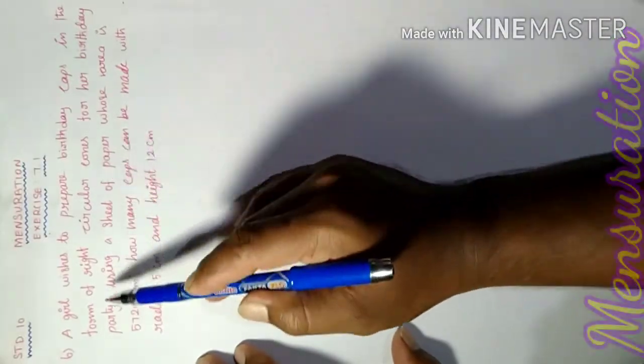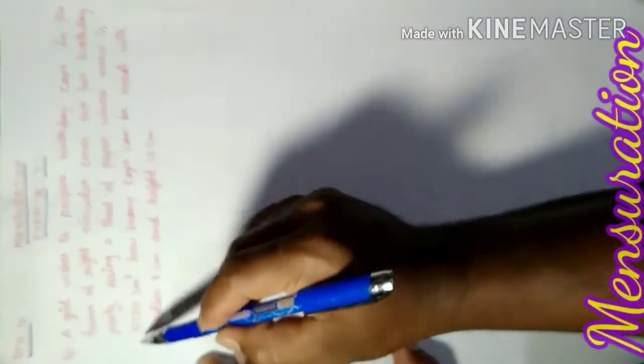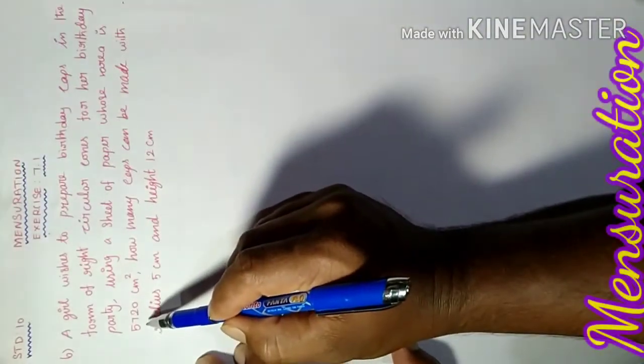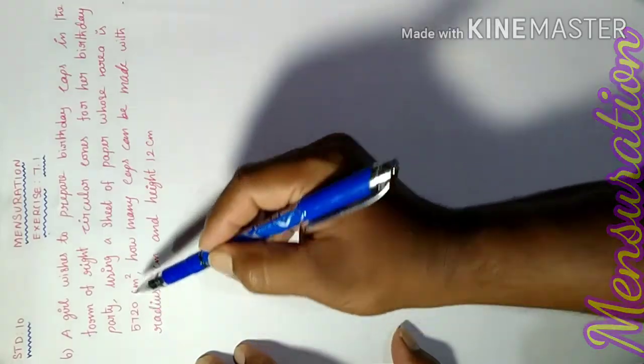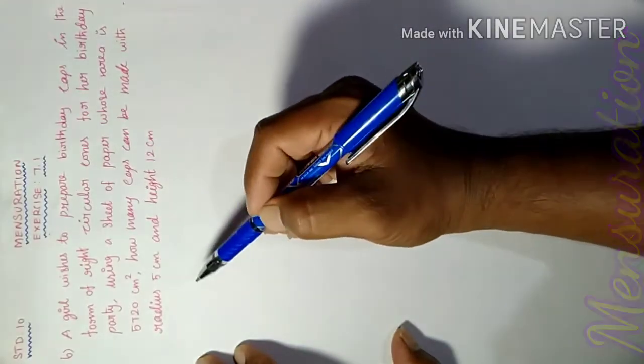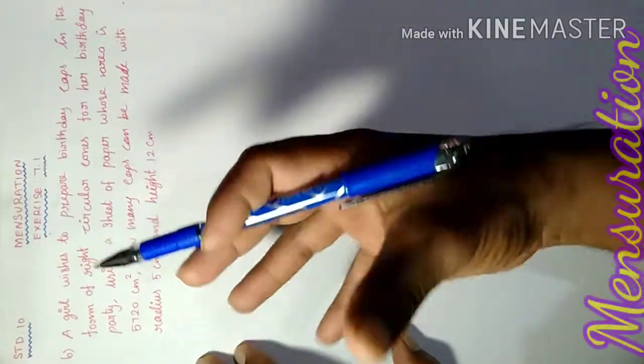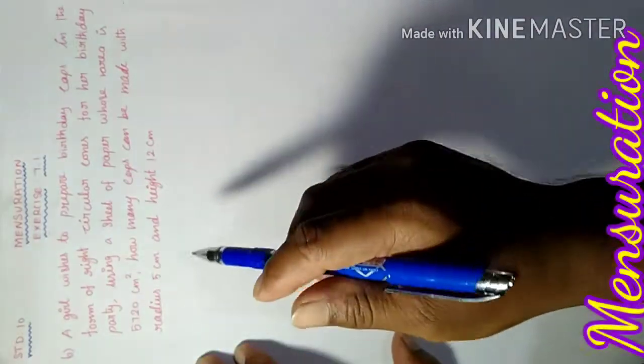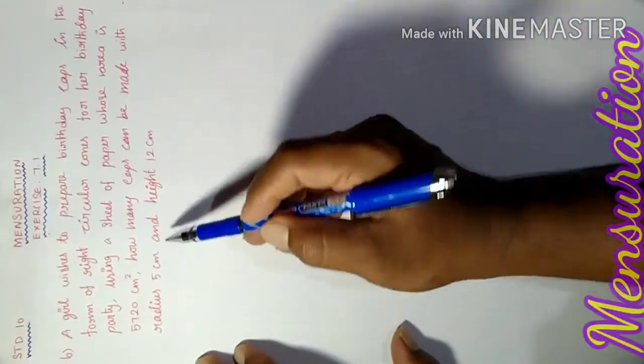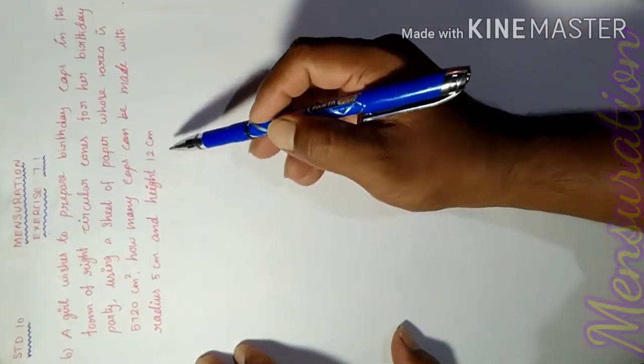Given: a girl has a sheet with total area 5720 cm². How many caps can be made with radius 5 cm and height 12 cm? Each cap has radius 5 cm and height 12 cm.